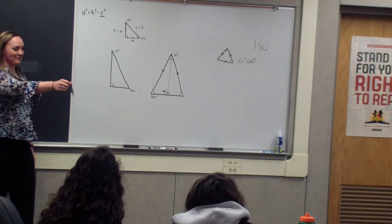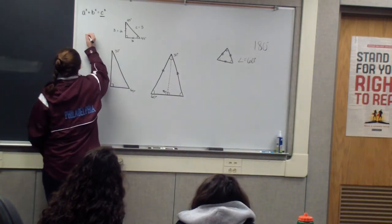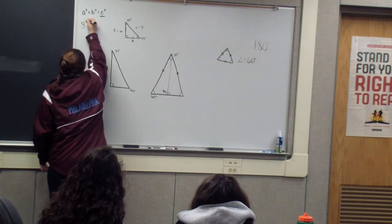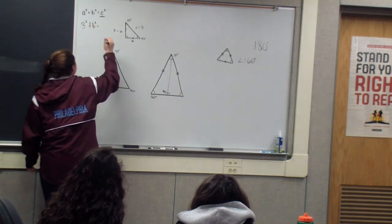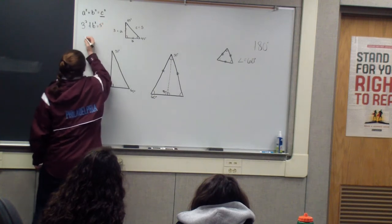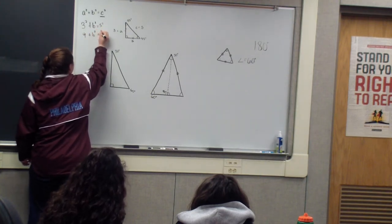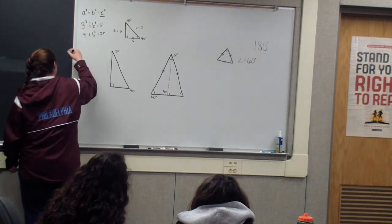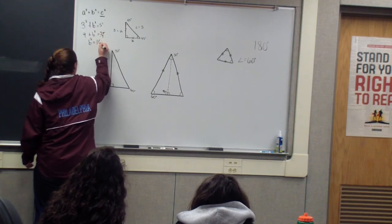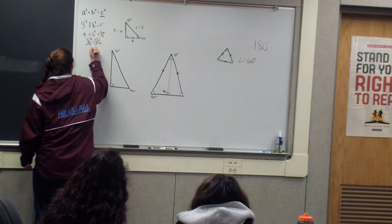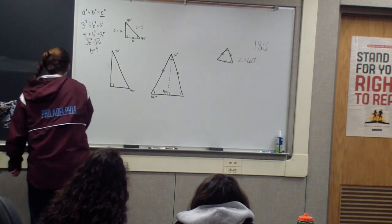Okay. So A is three, so if you plug it in here, it would be 3 squared. Then we don't know B. And C would be 5 squared, right? So we do 3 squared, that's 9. We still don't know B squared. And 5 squared is 25. Now, we need to get B on one side. So we subtract 9, making it 16. So if B squared is equal to 16, then we need to take the square root. And B would equal 4. Good.